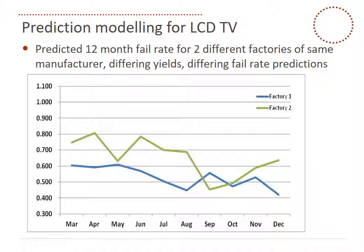Once we put this to use, you can see the predicted 12-month failure rate for two different factories — the same manufacturer — with differing yields, hence they have differing failure rate predictions for the same product types, the same designs built in different locations. Clearly we see a difference. That's the very important part: being able to drive manufacturing excellence, drive world-class yields, and minimize the escape level, which basically drives your early life warranty failure rate down to the lowest level. As you'd expect, as processes improve and yields get better, there is a downward trend in the actual predicted field failure rates.